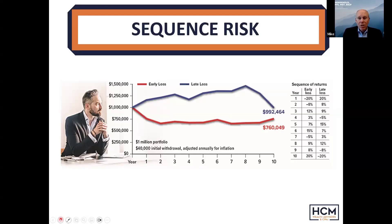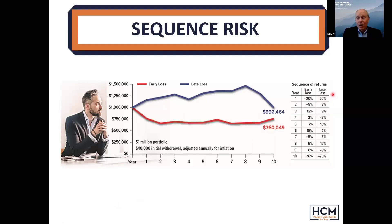On the right side of this slide you can see two potential streams of returns. In column one, a 20% loss in the first year. In the second column, a 20% gain. All we did was invert these numbers — it's the exact same stream of returns. And in fact, if you put a million dollars in a portfolio and got either of these columns of returns, when you got to the end, you would have about $1.4 million.